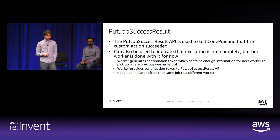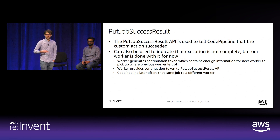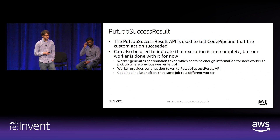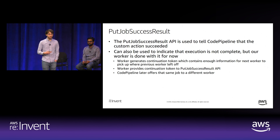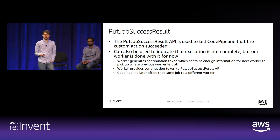PutJobSuccessResult tells CodePipeline that the custom action has succeeded and the pipeline can move on. Alternatively, the API can indicate execution is not yet complete but your particular worker is done for now—you generate a continuation token containing enough information for the next worker to pick up where you left off, provide it to the API, and CodePipeline will later offer that job to a different worker.